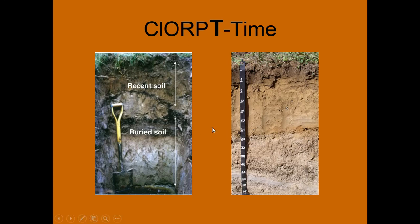Time can be important. On the right here, we don't have a whole lot of profile development. You can see an A horizon, some sort of E horizon, and then maybe our B or C down here — one, two, three soil horizons. On the left, we actually have a buried soil. Recent soil — this could be alluvium, colluvium, something like that — that came down and buried our previous soil. So the importance of time: when that happened and how much that soil has developed since it happened.